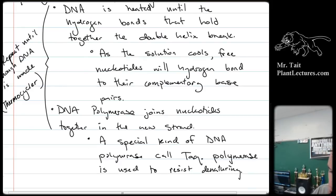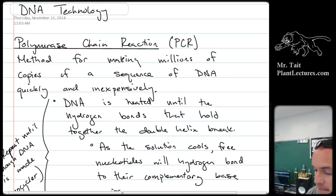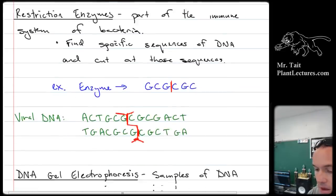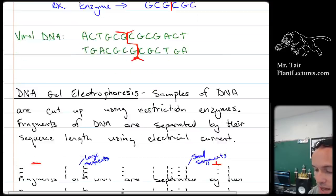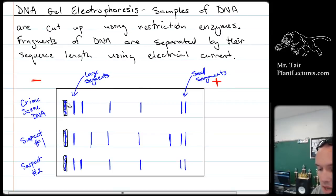We talked about DNA technology — we use the polymerase chain reaction to make many copies of DNA, and then we can cut them up using restriction enzymes and put them into a DNA gel electrophoresis machine where we run electrical current through them. Since DNA is negatively charged, it moves towards the positive end, meaning smaller segments will move farther towards the positive end and larger segments won't go as far.